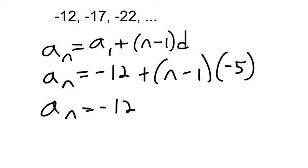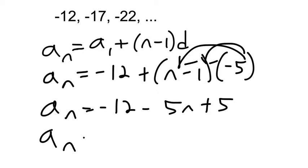You've probably been taught to simplify things. We can simplify with the distributive property. That's negative 5n plus 5. And so when you combine my terms, you have this cleaner version of the sequence.